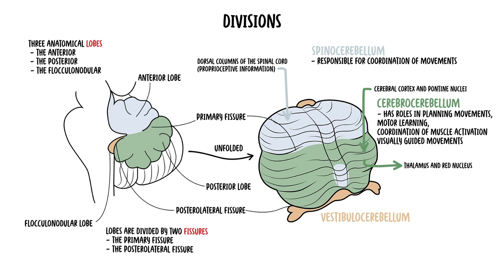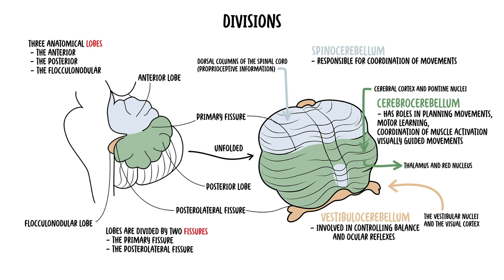Lastly, the vestibulocerebellum receives information from the vestibular nuclei and the visual cortex. It is involved in controlling balance and the ocular reflexes, in particular fixation on a target. The vestibulocerebellum receives input from the vestibular system and sends output back to the vestibular nuclei.